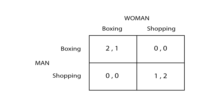If they both go either shopping or to a boxing match, both will receive some utility from the fact that they're together, but one of them will actually enjoy the activity. Therefore they will receive a final payoff of two or one, depending on what they actually want to do. Since the couple wants to spend time together, if they go separate ways they will receive no utility, and therefore the final set of payoffs will be zero, zero.